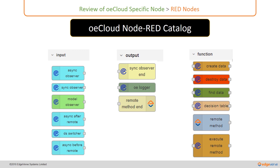We have a decision table implementation and a Remote Method. For this Remote Method, we always use the output node Remote Method End as the end operation. And we have the Execute Remote Method.